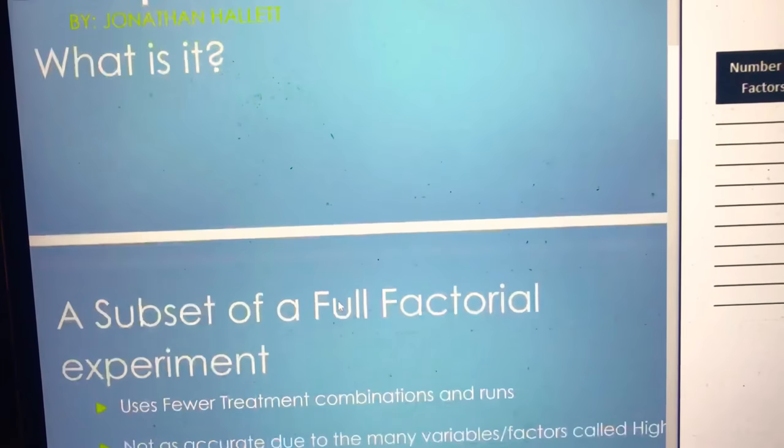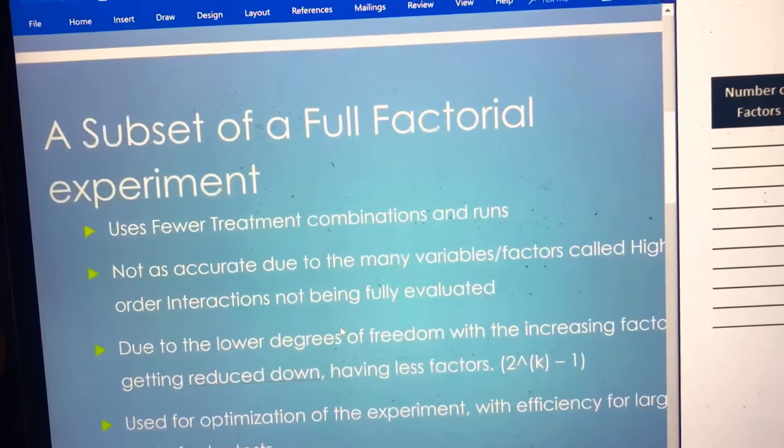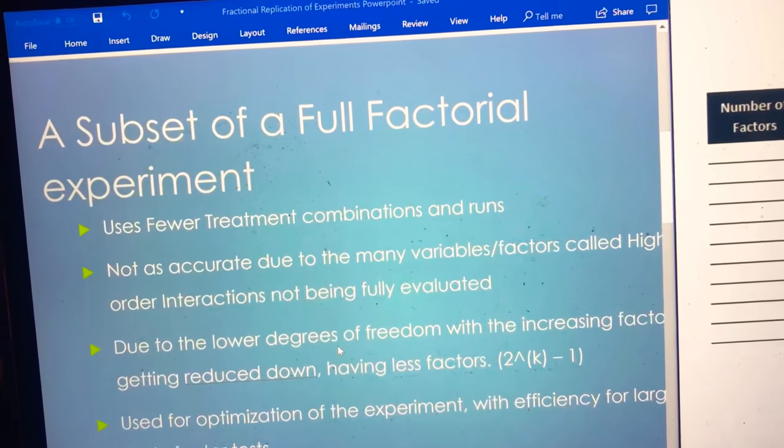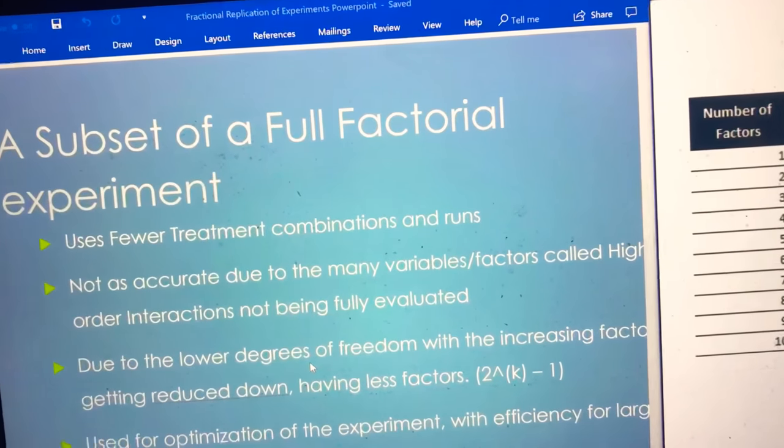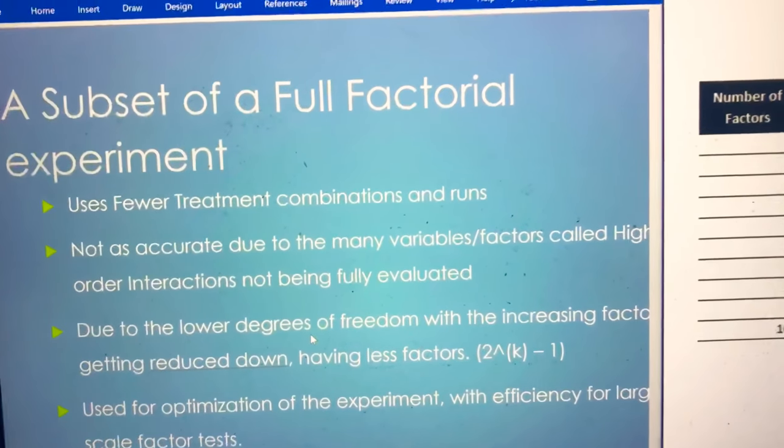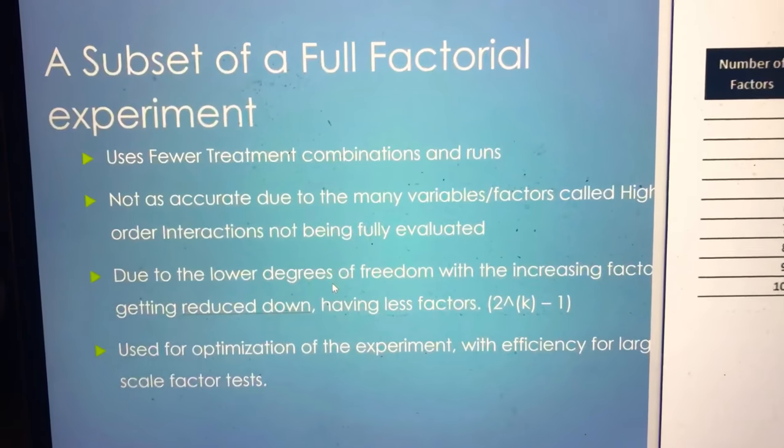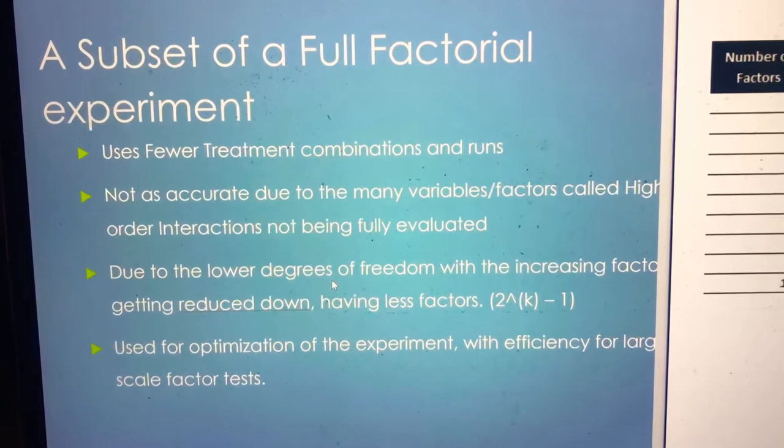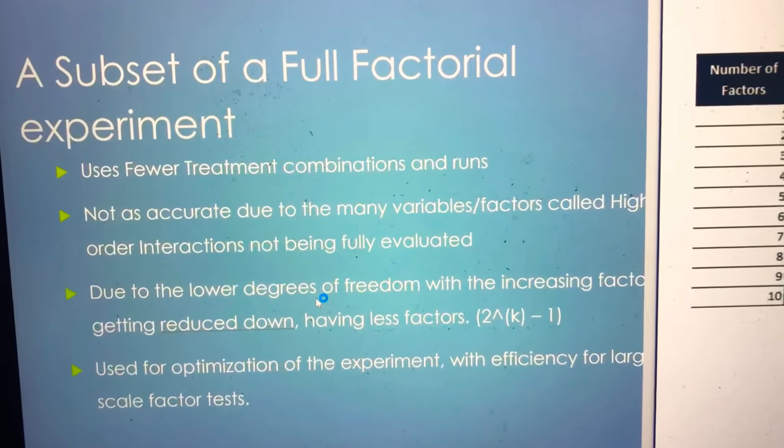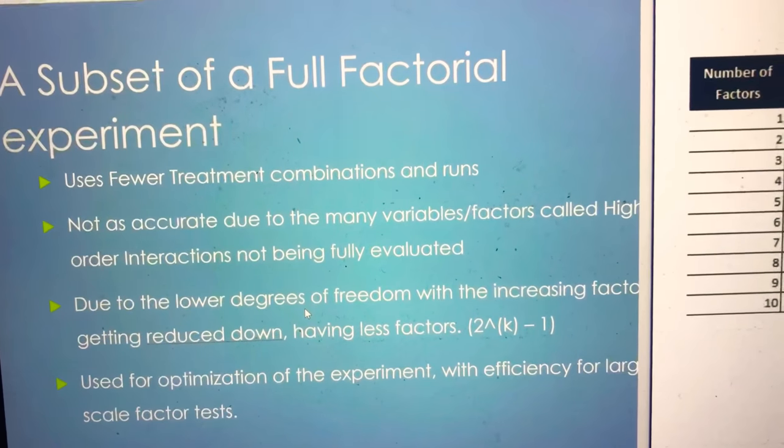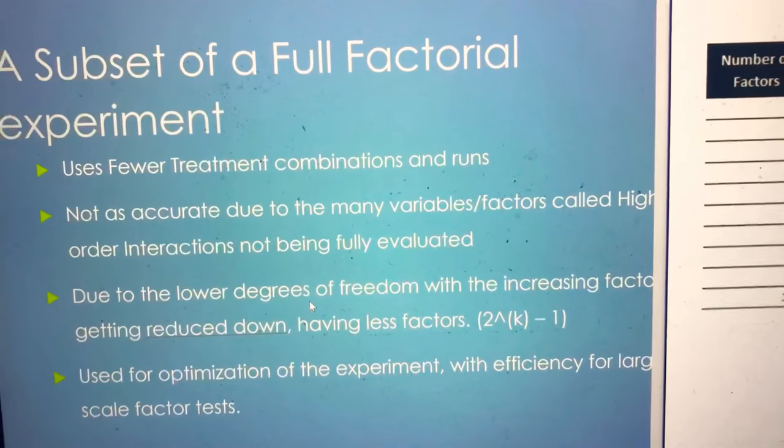A fractional replication of experiments is a subset of the full factorial experiment. Whereas in the full factorial experiment you have to do 2 to the k power, in a fractional replication you do 2 to the k minus 1, reducing it by a whole power of 2.